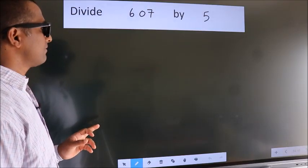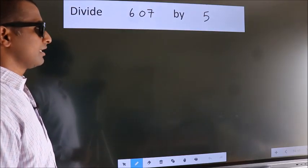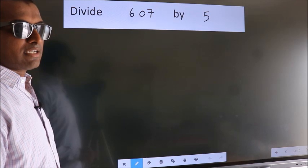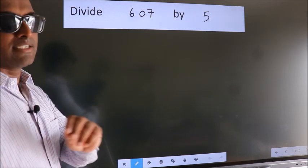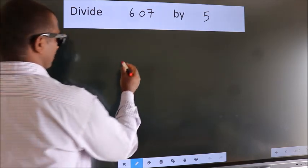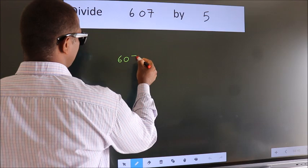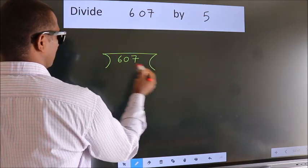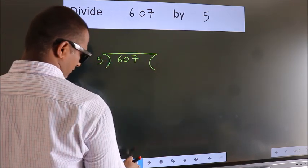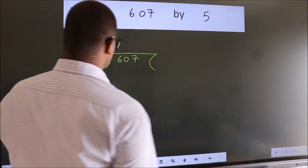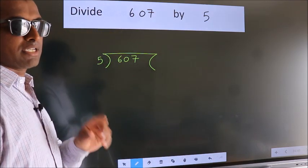Divide 607 by 5. To do this division, we should frame it in this way. 607 here, 5 here. This is your step 1.